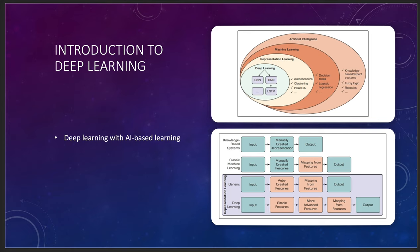Now we're going to take a look at what's called deep learning. Deep learning with AI-based learning is a really interesting process. It can also be known as deep structured learning and is part of a broader family of machine learning methods based on artificial neural networks (ANN) with representation learning. Learning can be supervised, semi-supervised, or unsupervised.